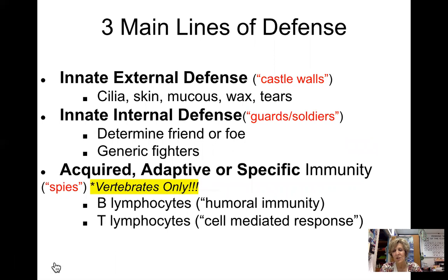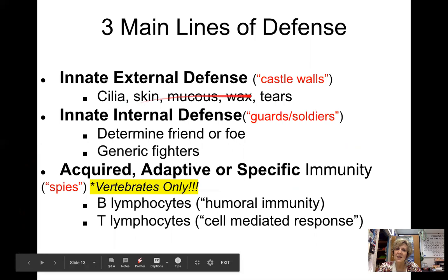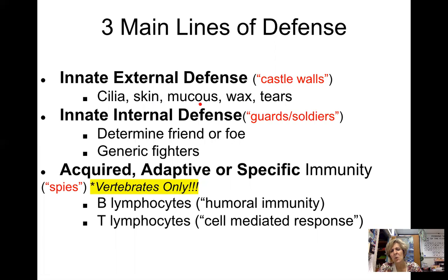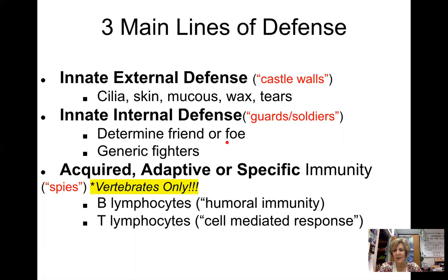Hopefully by now you've watched the Bozeman Biology video on the introduction to the immune system. Dan Anderson breaks it down like protecting a castle. The external defense — cilia, mucus, skin, wax, tears — are like the castle walls, the outermost barrier. The innate internal defense would be like guards or soldiers: if the enemy breaches the walls, you have generic fighters. They determine friend or foe by antigens on the surface, but they're not specific — they fight anything foreign.